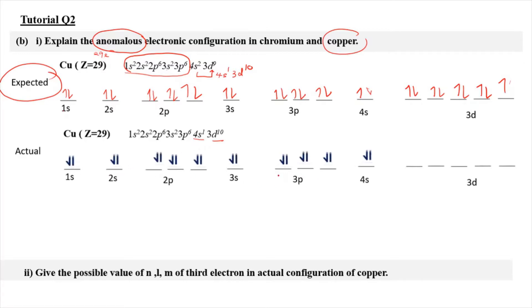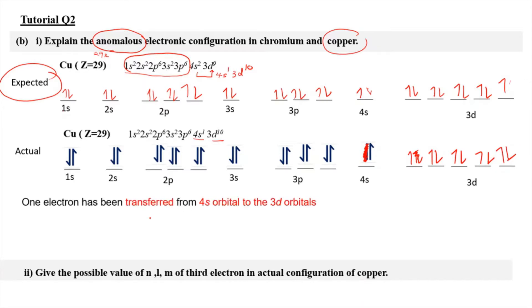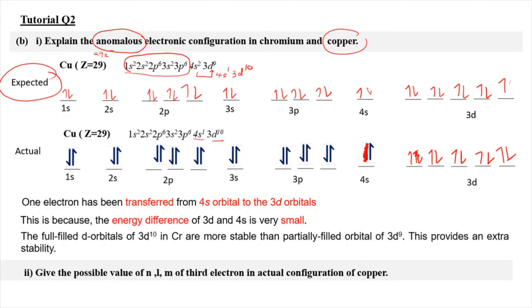We draw the orbital diagram and complete the unaffected part. For the 4s orbital, one of the electrons is transferred into 3d, leaving 4s with only one electron. The 3d then becomes: 1, 2, 1, 2, 3, 4, 5, 6, 7, 8, 9 — and with the transferred electron it becomes 3d10. The reason is the same: one electron transferred from 4s to 3d because the energy difference between 3d and 4s is very, very small, and the full-filled 3d10 orbital in copper is more stable than the partially filled 3d9, providing extra stability.